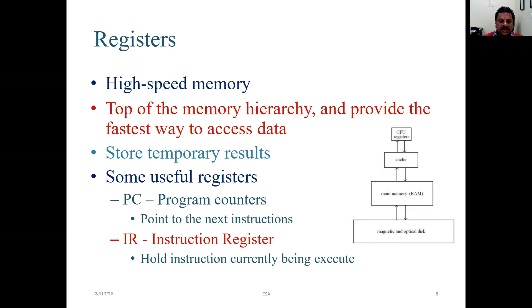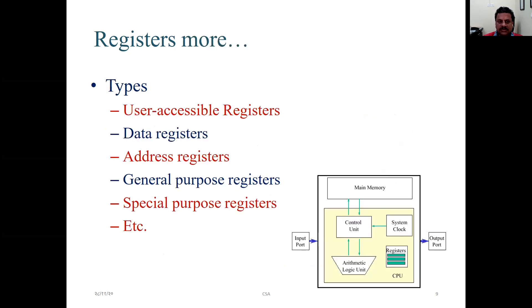Some useful registers are highlighted here. They are program counters. Program counters basically point to next instructions. Then you have instruction registers to hold instructions currently being executed. And also you have here a block diagram or a flowchart representing the hierarchical concepts of register. A few more register types: user-accessible registers, data registers, address registers, general-purpose register and special-purpose register. As the name suggests, general-purpose registers are used for general-purpose, where special-purpose are bound only to focus on a particular work.